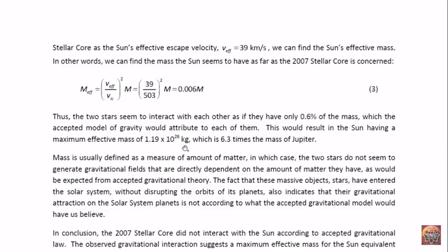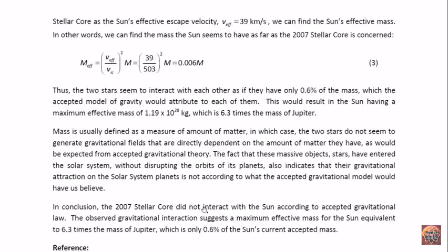Now, that seems larger than Jupiter, but don't forget, the sun is supposed to be 1,000 times more massive than Jupiter. And according to that stellar core, the sun had a mass which must have been less than 6.3 times the mass of Jupiter. Mass is usually defined as a measure of amount of matter, in which case the two stars do not seem to generate gravitational fields that are directly dependent on the amount of matter they have, as would be expected from accepted gravitational theory. The fact that these massive objects, stars, have entered the solar system without disrupting the orbits of its planets, also indicates that their gravitational attraction on the solar system planets is not according to what the accepted gravitational model would have us believe.